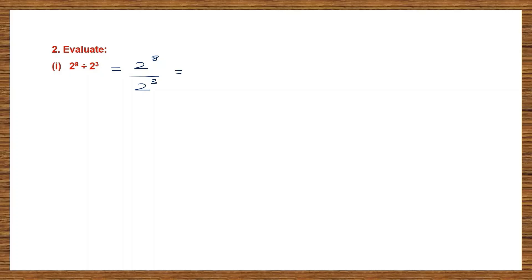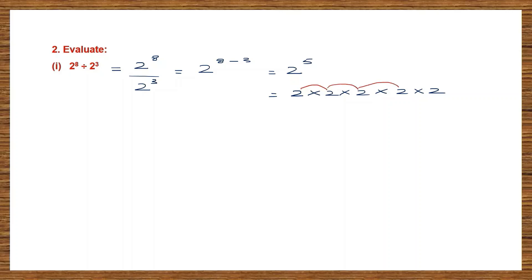Since the base is the same, we write the same base: 2 raised to the power of 8 minus 3. Remember, you subtract the smaller power from the bigger power. So 8 minus 3 is 5, giving us 2 raised to the power of 5, which means multiplying 2 five times: 2×2×2×2×2. So 2 twos are 4, 4 twos are 8, 8 twos are 16, 16 twos are 32. The answer to this question is 32.